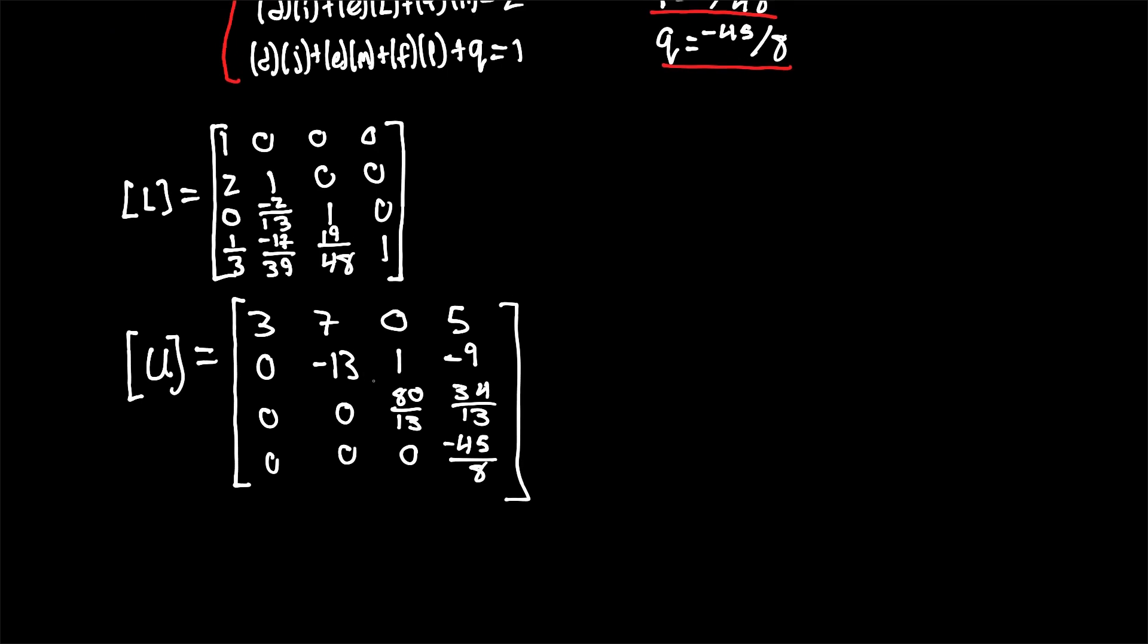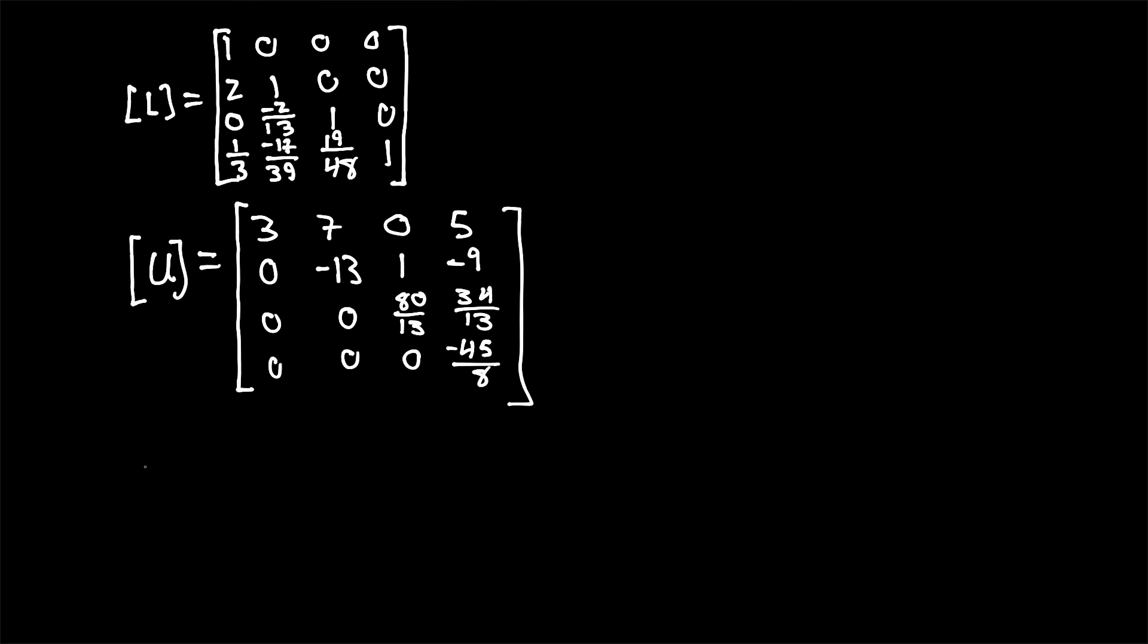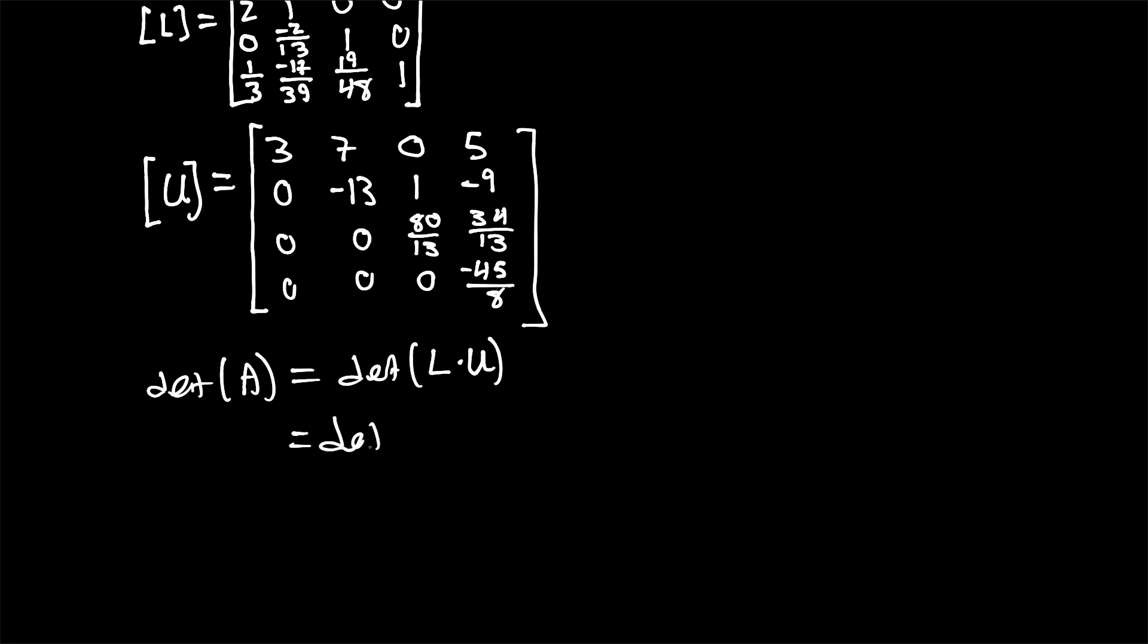And there we have the lower and upper matrices for representing matrix A as we had before. Interestingly enough, if we want to compute the determinant, since this diagonal is all 1s, we would just multiply the diagonals of matrix U all together to get the determinant. So the determinant of matrix A is equal to the determinant of matrix L times matrix U. Given that LU multiplied together, the matrices LU will produce matrix A. We can simply denote that the determinant of matrix L is 1. The determinant of matrix U is the multiplication of this diagonal, which equals determinant L times determinant U.